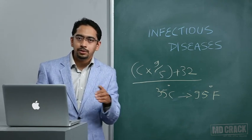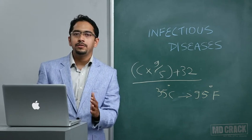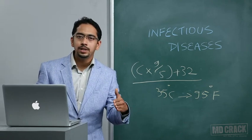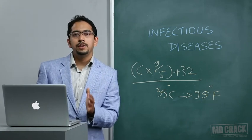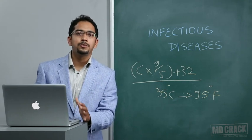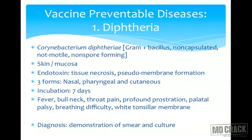For example, in vivax malaria we have tertian fever — fever on days 1, 3, and 5. Quartan fever occurs on days 1 and 4, as seen in Plasmodium malariae infection. Biphasic fever, also called camel-back fever, is characteristically seen in polio, dengue, leptospirosis, and yellow fever — four disease entities that give rise to biphasic fever, making this a common MCQ topic.